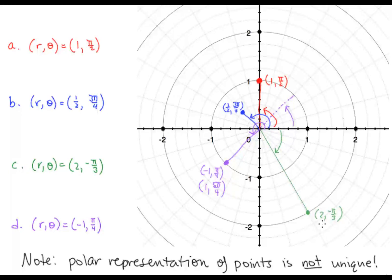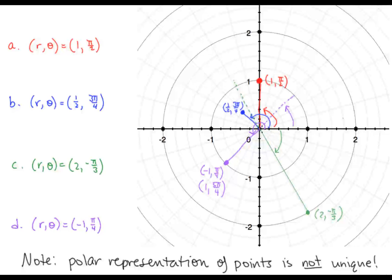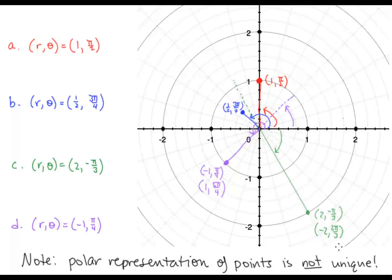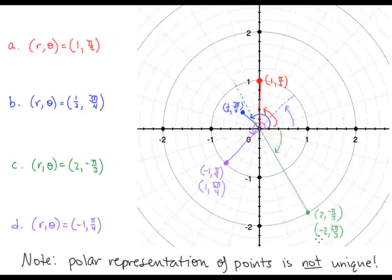For example, the point (2, -π/3) can also be represented using θ = 2π/3 — which would be up in this direction — but then going backwards two units, so having a negative 2 for a radius: (-2, 2π/3). We could also represent this point with θ = 5π/3 and r = positive 2. So again, polar representation of points is not unique.